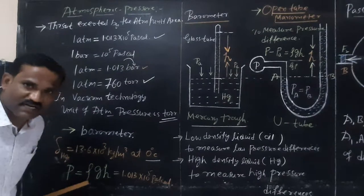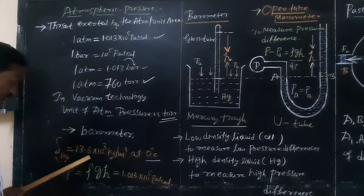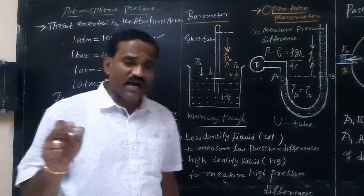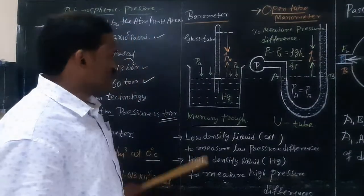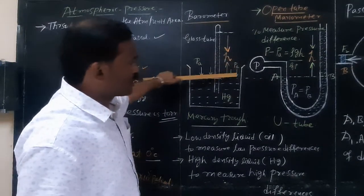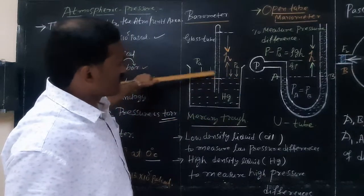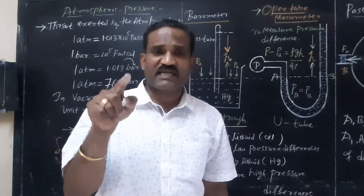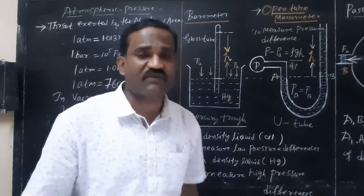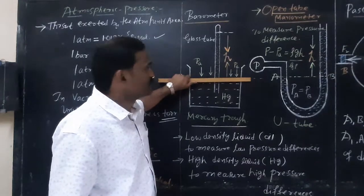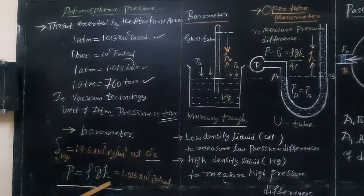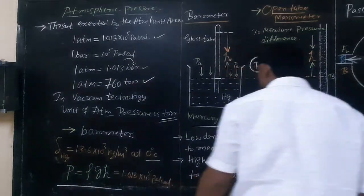To calculate atmospheric pressure: P equals rho — the density of the liquid — times g, the acceleration due to gravity, times h, the height of the mercury column that rises in the glass tube. This height equals whatever pressure is exerted by air molecules on the mercury surface in the trough. The mercury column stands at 760 millimeters, and substituting gives 1.013 × 10⁵ Pascal.